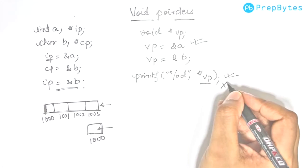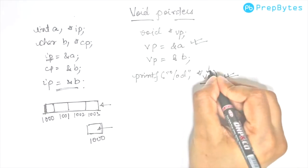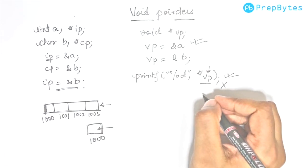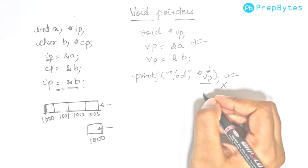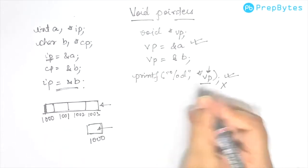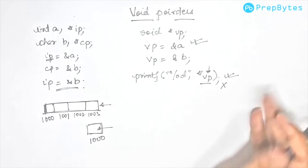So what we need to do is typecast this to an integer pointer. Similarly, if we have to get a character variable, we have to typecast this to a character pointer. How do we typecast it? We have to convert this into an integer pointer.